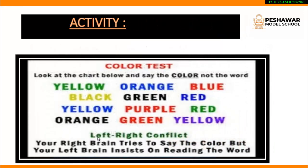Here is an interesting activity: your right brain tries to say the color, but your left brain insists on reading the word. When the color and the word are different, both parts of the brain come into contradiction — for example, 'yellow' is written in green. The instruction is to say the color, not the word. This creates a left-right conflict, and this activity is called the left-right conflict activity, which helps test the functions of right and left brain.